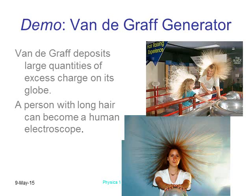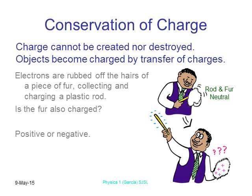A Van de Graaff generator deposits electrons onto its surface — electrons are deposited on that dome on top. If you touch it, classically those electrons will run to the tips of your hair, just like they ran to the tips of the electroscope legs. They try to spread as far away from each other as possible, going to the tips of things. If you have long hair, it spreads out and looks kind of funny.